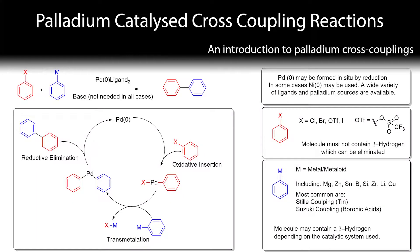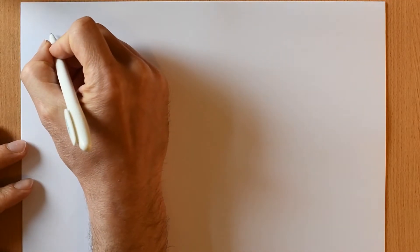This is an introduction to Palladium cross-coupling reactions. It's a type of chemical reaction that allows you to form sp2-sp2 carbon bonds in a way that wasn't previously possible.